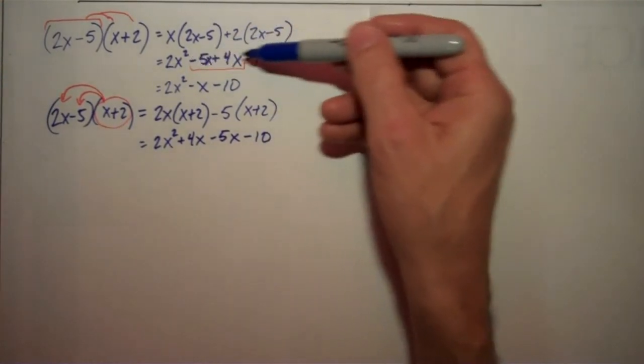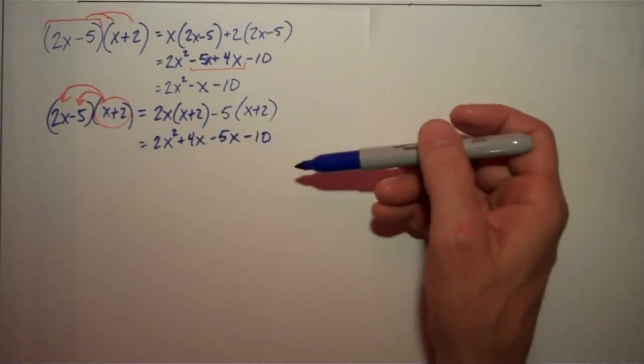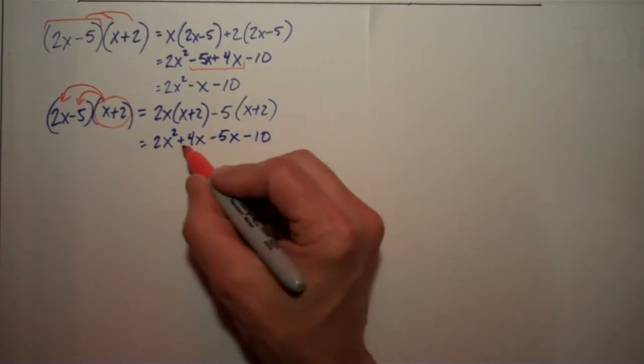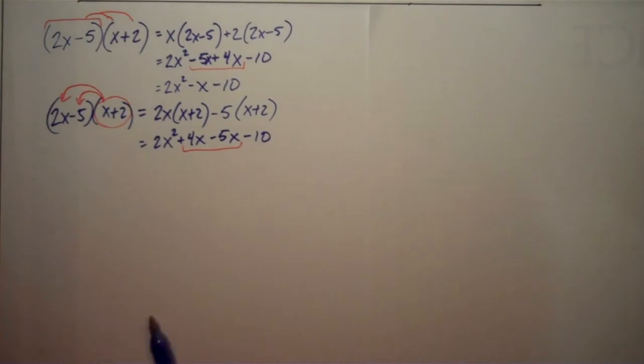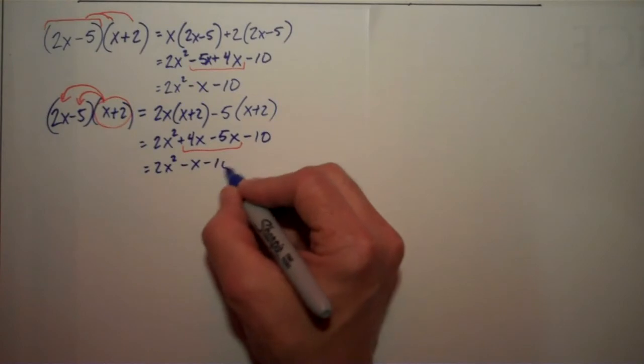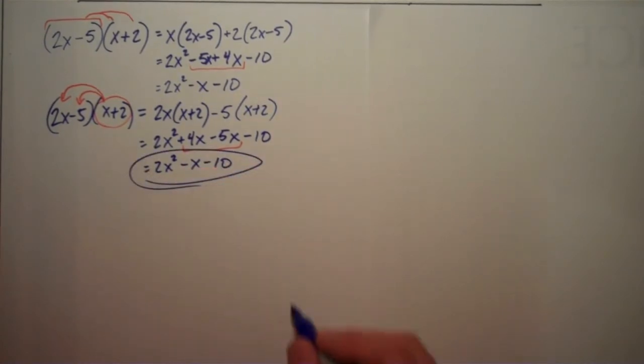And what you can see is I got the exact same terms here that I got here. So this is going to give me, of course, the exact same answer when I combine these like terms. And that is 2x squared minus x minus 10. And that's our answer.